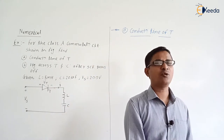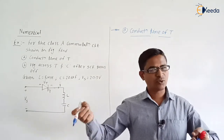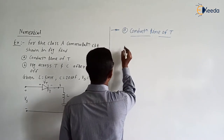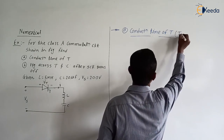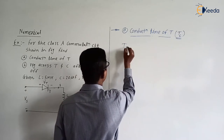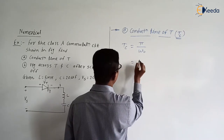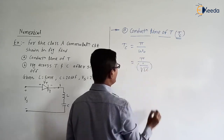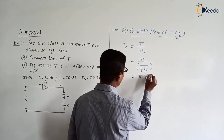Because the current is sinusoidal and when ω₀·t = π, the current becomes zero. So the thyristor conducts only from t = 0 till t = π/ω₀. So conduction time Tc = π / ω₀, which equals π divided by (1/√(LC)), and that can be written as Tc = π · √(LC).